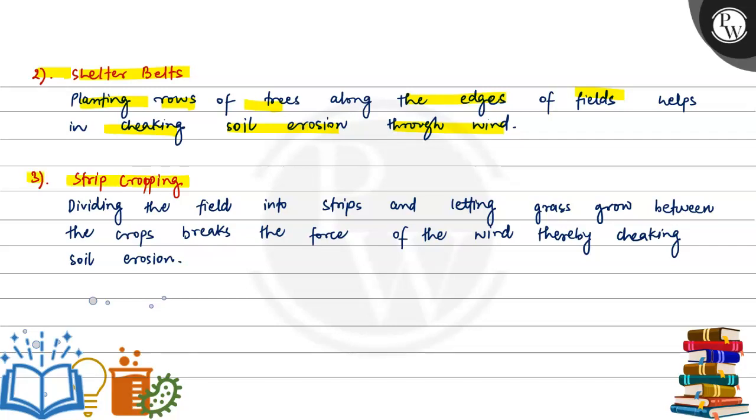The third point is strip cropping. Dividing the field into strips and letting grass grow between the crops breaks the force of the wind and thereby checks soil erosion.